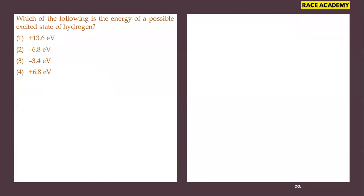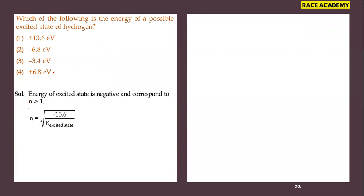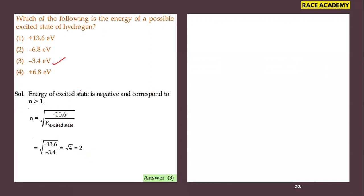Next question: which of the following is the energy of a possible excited state of hydrogen? The values are given in electron volts. The energy of the excited state is negative and corresponds to n greater than 1. Using En = −13.6/n², if we substitute −3.4 eV, the n value we get is 2. So the energy of the possible excited state of hydrogen is −3.4 electron volts. This is from the atomic structure chapter.